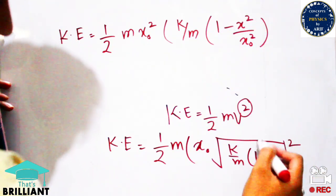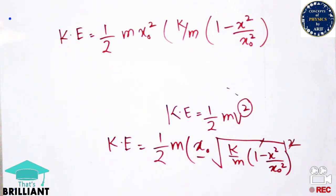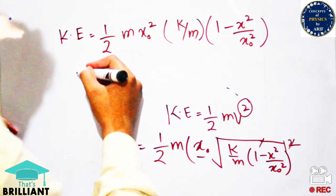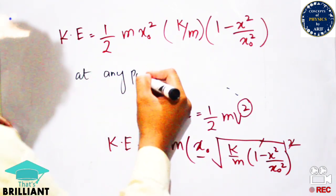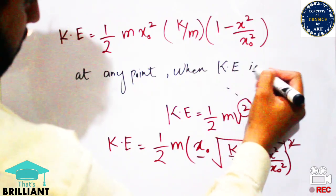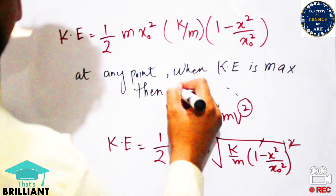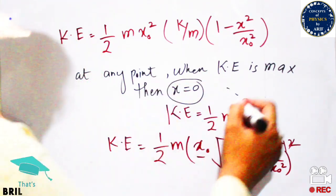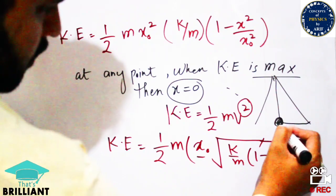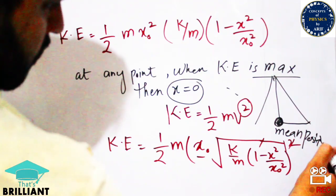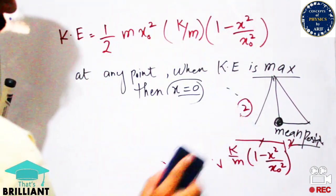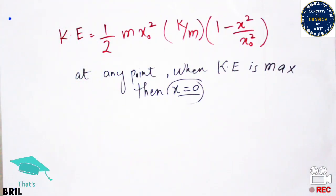The square root is cancelled by the square term, and M cancels out in the expression. At any point X, the kinetic energy is expressed accordingly. The kinetic energy is maximum when X = 0, i.e., when the body is at the mean position. At the extreme position, the kinetic energy is zero because the velocity at that point is zero. At the mean position, the potential energy is zero.